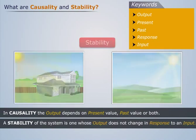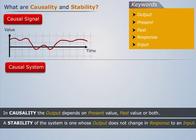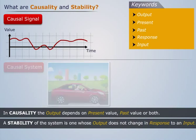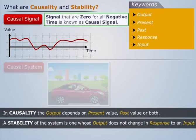In the next section we'll discuss causal signal and causal system. First, we'll discuss causal signal. A signal that is zero for all negative time is known as causal signal.